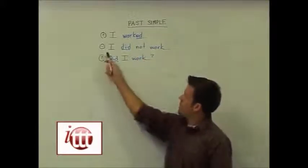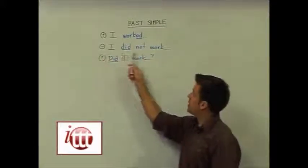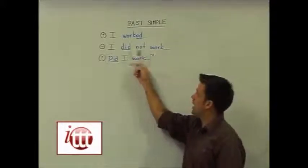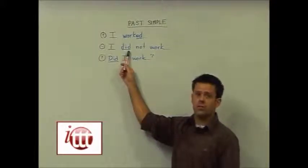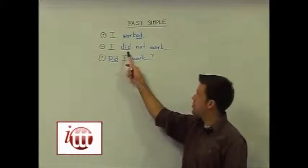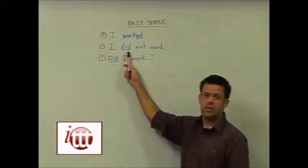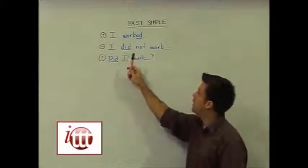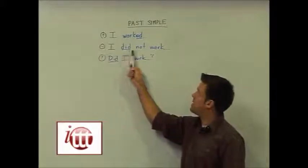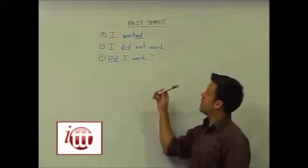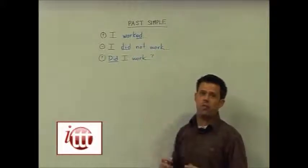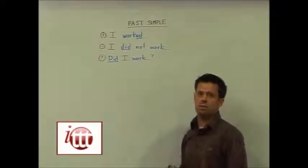For negative sentences, rather than changing the main verb, we add our helping verb — the auxiliary verb — in this case being 'do'. So I've changed 'do' to 'did' to indicate the past, resulting in a sentence structure such as 'I did not work.' 'Did not' is the full form; obviously we can contract this into 'didn't'.